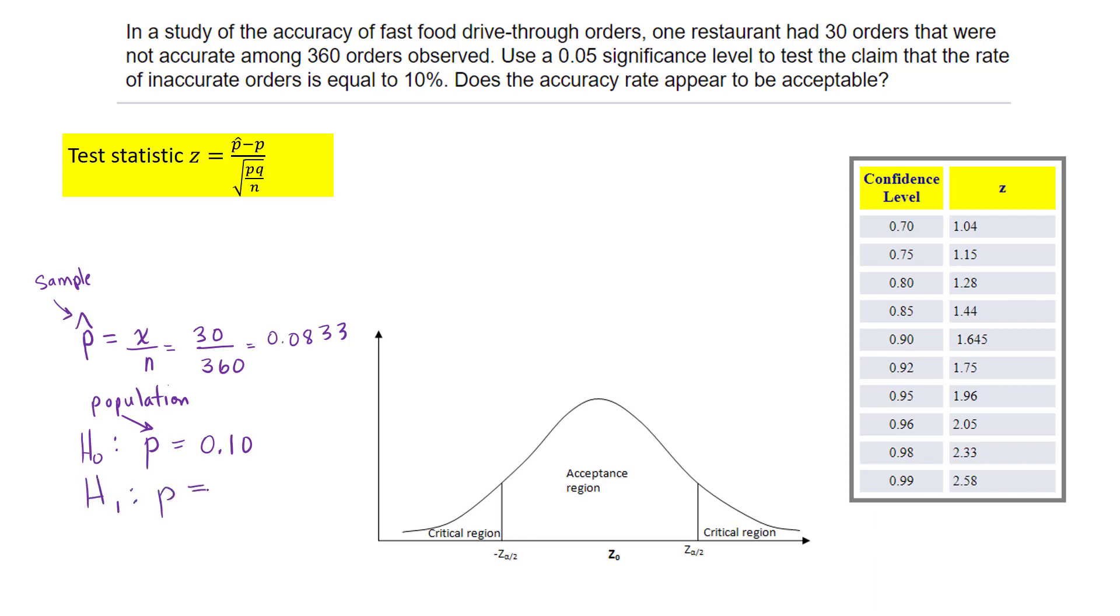The alternative hypothesis is that they do not equal 10%. There was nothing in the problem saying higher or lower. We want to see if this value falls in our rejection region using alpha of 0.05.